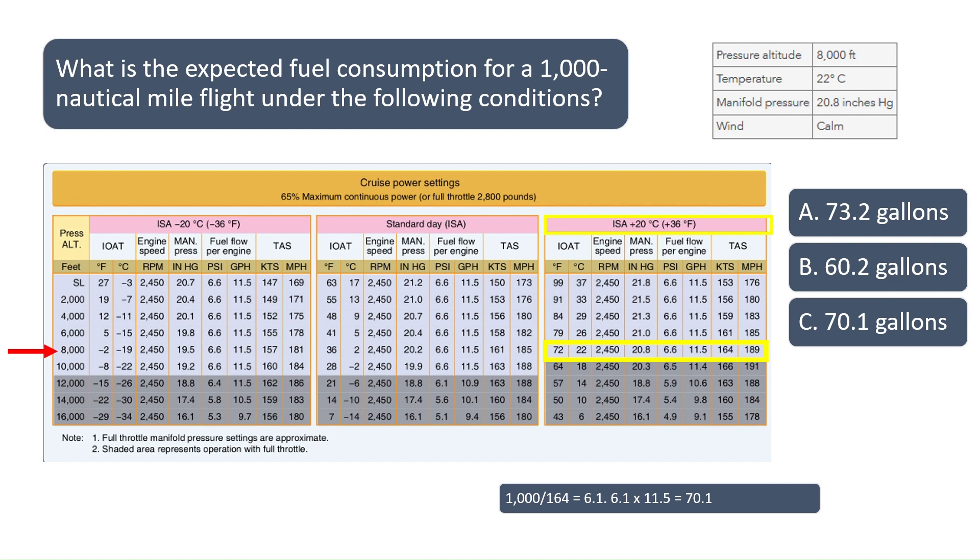Since the flight will be 1,000 nautical miles and our expected true airspeed is 164 knots, divide 1,000 by 164 to get the expected flight time of 6.1 hours. Since the aircraft is expected to burn 11.5 gallons per hour, multiply 11.5 by 6.1 to get 70.1. Given the current conditions and aircraft performance, the aircraft will be expected to burn 70.1 gallons of fuel during this 1,000 nautical mile flight. The correct answer is C.